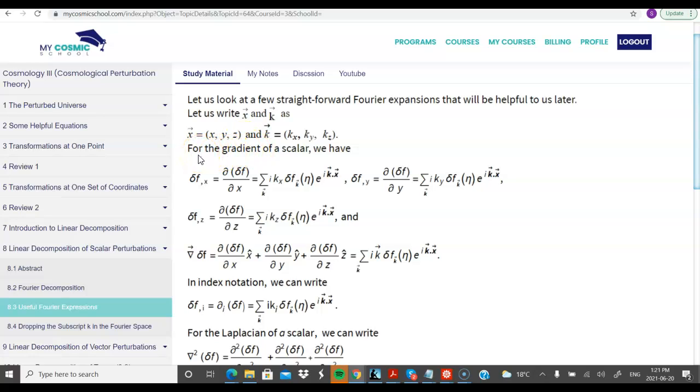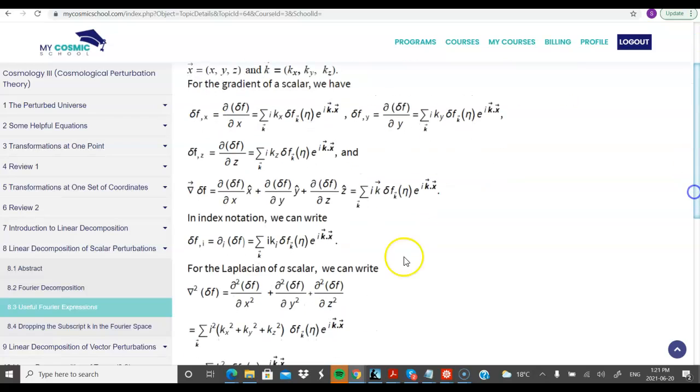And we want to find the gradient of delta f and the Laplacian of delta f. That's what we can do with a scalar. So we find the gradient of a scalar, we find the Laplacian of a scalar and the gradient of a scalar, the mathematics is pretty much straightforward.